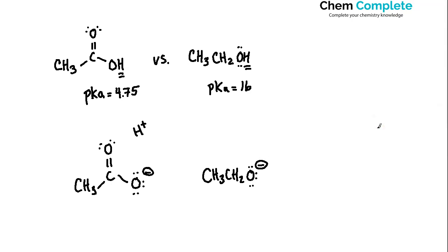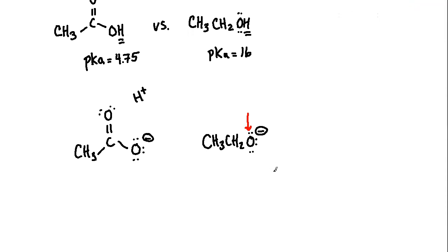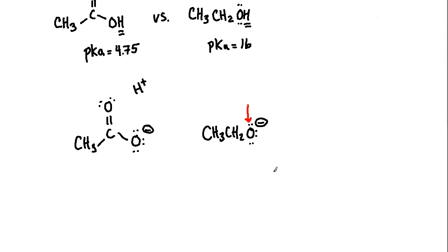The big difference is that when ethanol loses its hydrogen, the charge is localized to that one oxygen — it does not have anywhere else to go. It's good that oxygen is electronegative, which helps in hosting the excess charge, but it is still burdensome to have it all localized in one area. It's much better to be able to spread out the excess electrons.